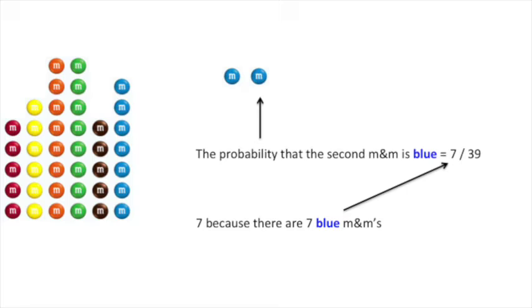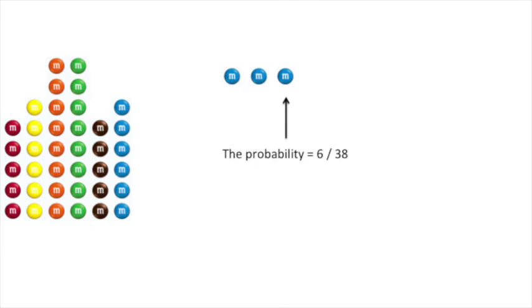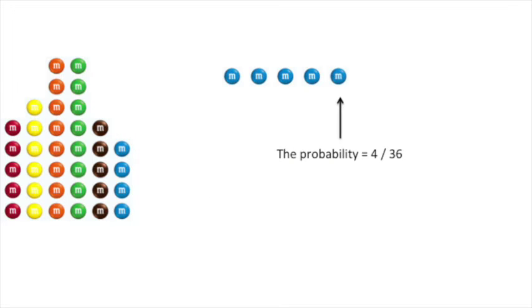7 because there are now only 7 blue M&Ms in the bag divided by 39 because there are only 39 M&Ms. Now there are only 6 blue M&Ms left in the bag. The probability of getting a third blue M&M is 6 over 38 leaving 5 blue M&Ms left in the bag. And by now you've probably grasped the pattern for how we determine the probabilities for getting a sequence of blue M&Ms.